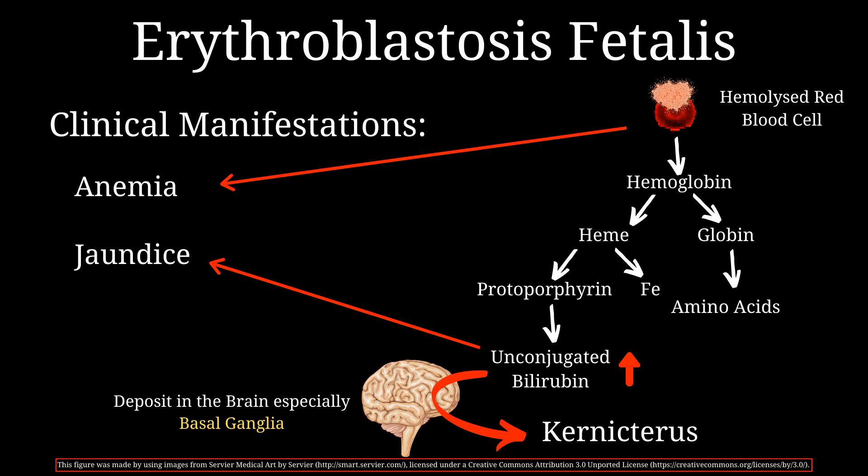Due to an increase in the demand for red blood cells, extramedullary hematopoiesis kicks in, meaning that the production of red blood cells is taking place outside the bone marrow. The liver and the spleen are the main sites for this, and this accounts for their enlargement, known as hepatosplenomegaly.